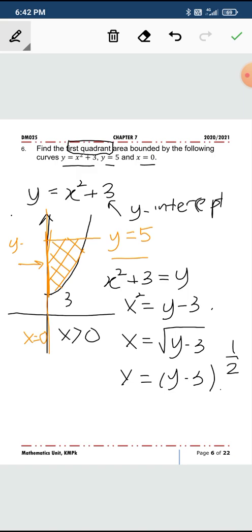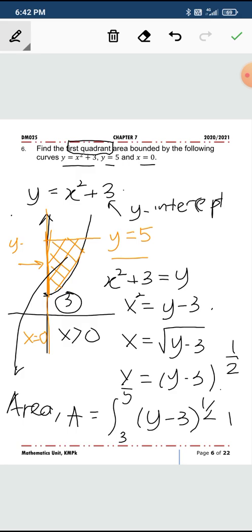And now we write to find the area, let it be A. We integrate. See here, that's interesting. This value 3 is not mentioned, but has to be implied from the y-intercept. So 3 will be our lower limit. The upper limit will be 5. And the function is y minus 3 to the power of half, and we integrate with respect to y.